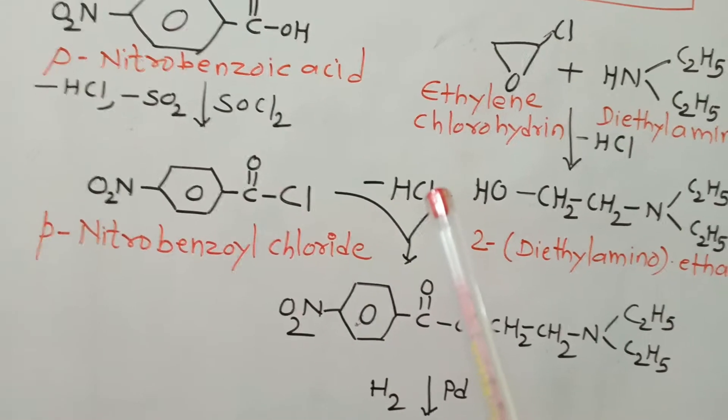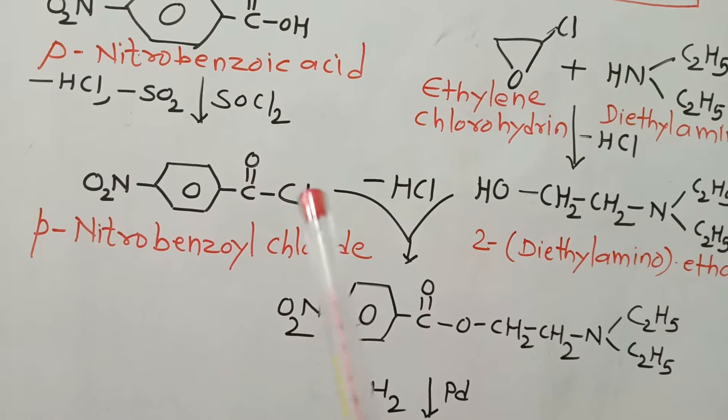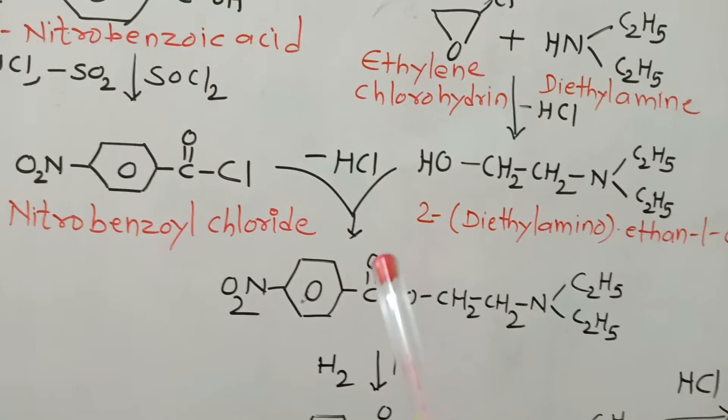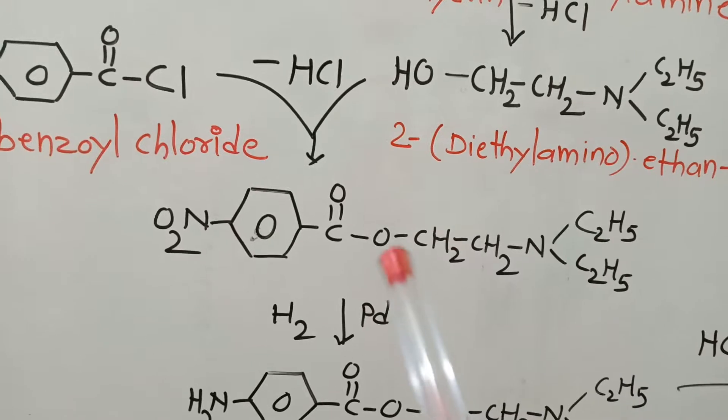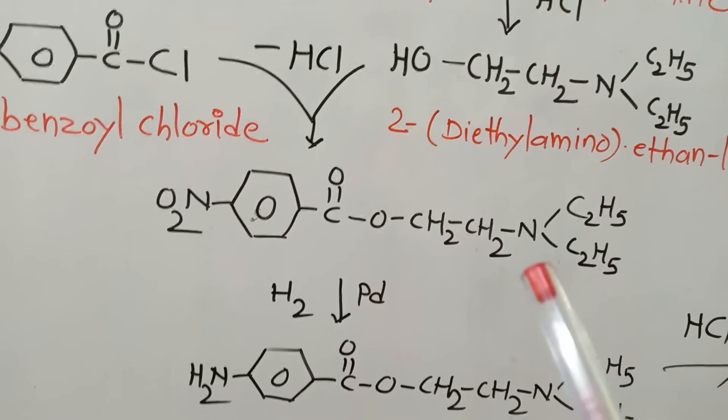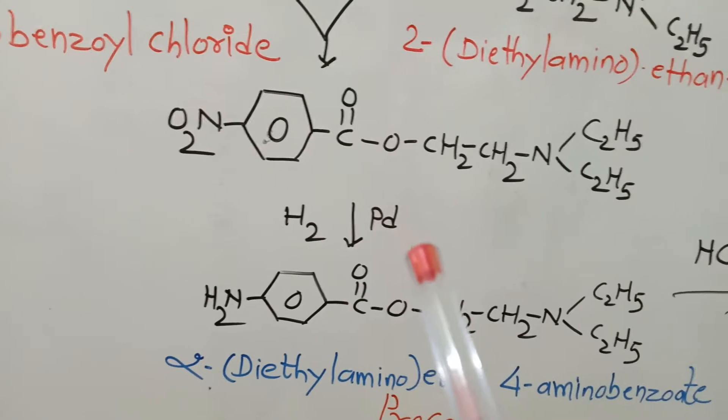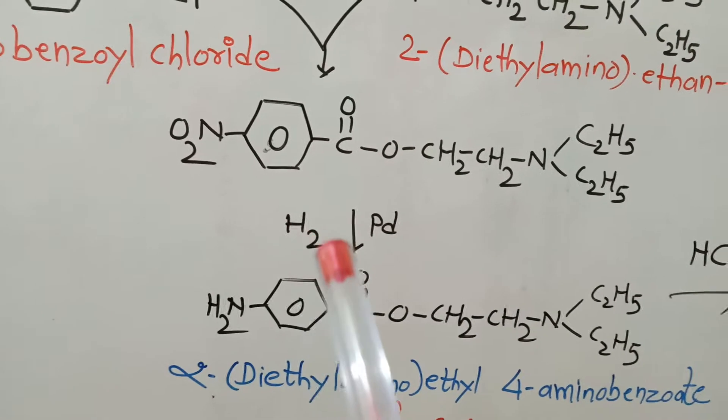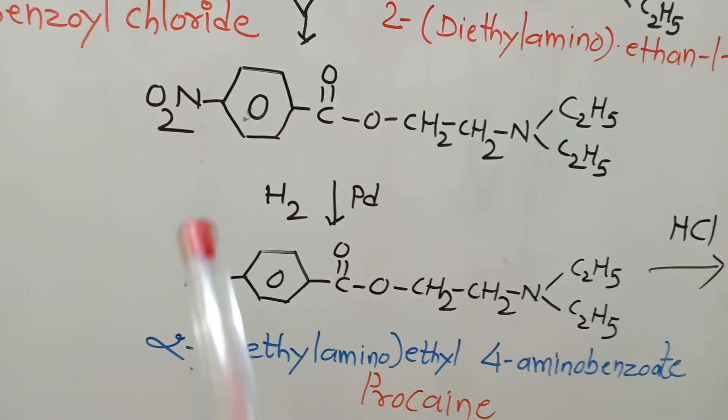There is release of HCl - hydrogen from the alcohol and chlorine from benzoyl chloride - forming the ester COO linkage. The ester derivative undergoes reduction in presence of hydrogen and the catalyst palladium, where the nitro group is converted to the primary amino group.